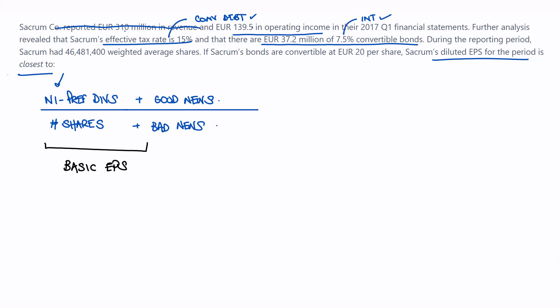During the reporting period, Sacrum had 46,481,400 weighted average shares — that's gifted to us. At Level 1 they won't make you calculate every single adjustment in one question. The bonds are convertible at 20 euro per share. I know the total value and the value per share, so I can calculate new shares. There's absolutely no mention of preferred dividends, so I won't make them up. I need net income, the share count, and the good and bad news from the convertible debt.